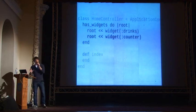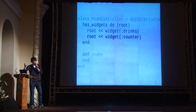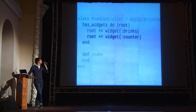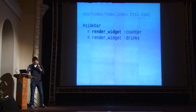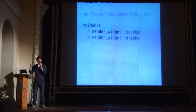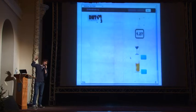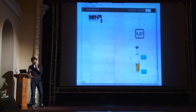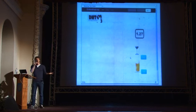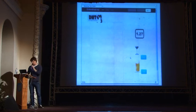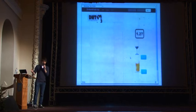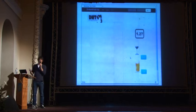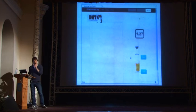To render the widget in my dashboard, in my home controller, I attach it to the widget tree using the has_widgets method, adding the counter widget to the root. Then in the index view, I call render_widget counter and it stubs out the counter on the right side, with the drinks list below it — two completely separated user interface elements, also known as widgets.